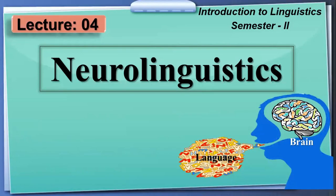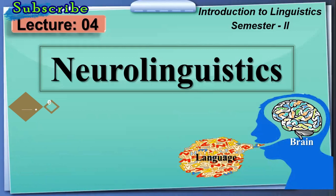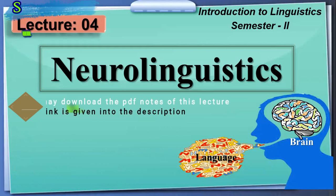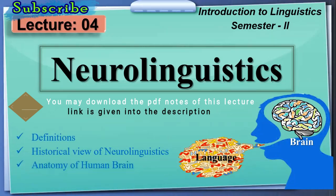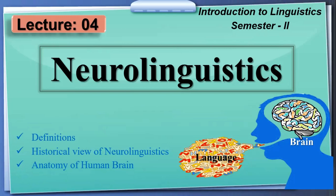Welcome to the CERA Lecture Series program. Today we are going to talk about Neurolinguistics. This topic is from the contents and introduction to Linguistics, Semester 2. We are going to cover the following points: definitions, historical view of Neurolinguistics, anatomy of the human brain — understanding how the brain controls language — and language and brain as a whole.